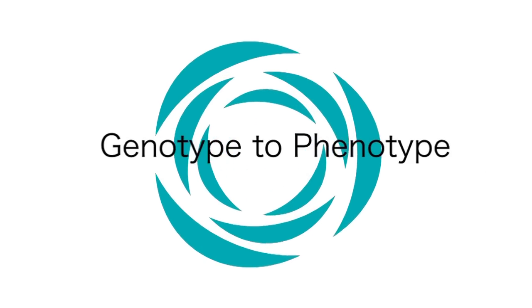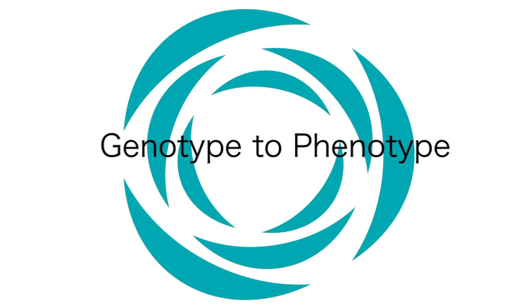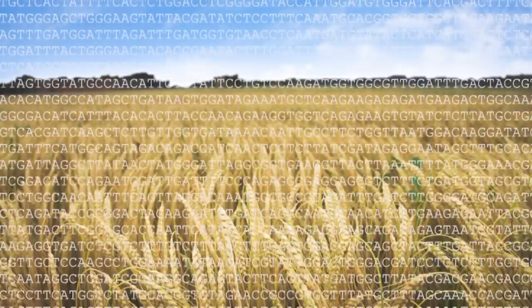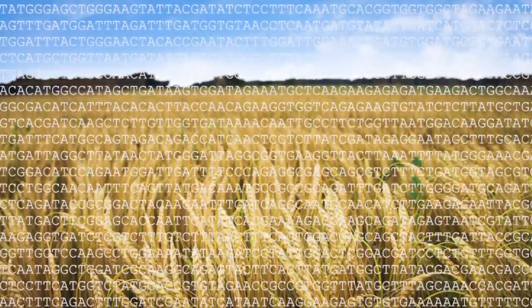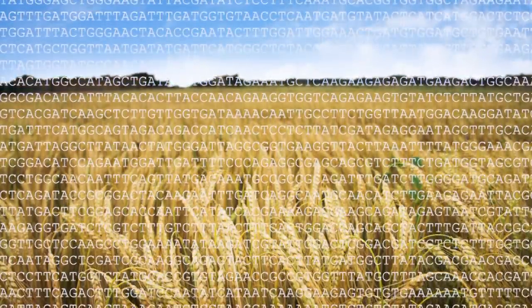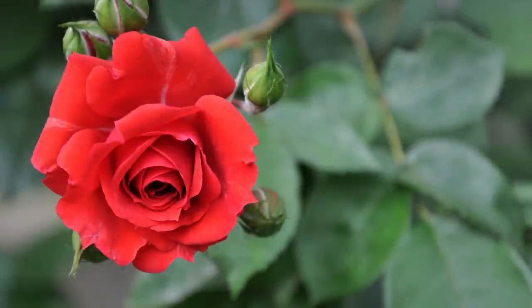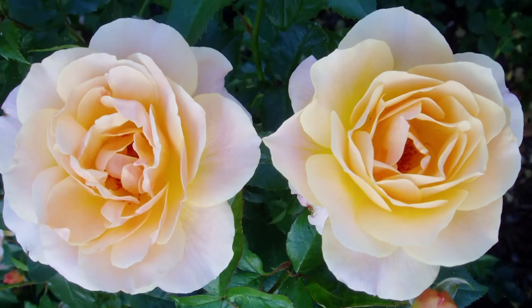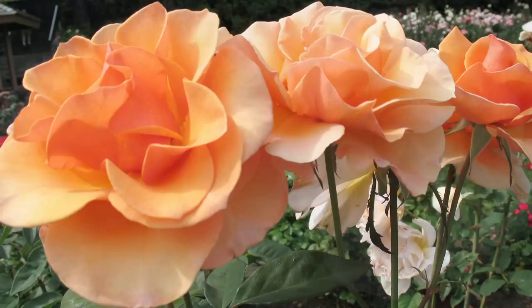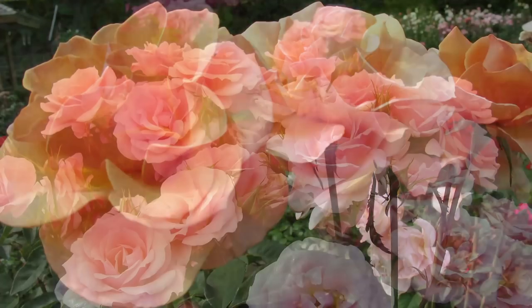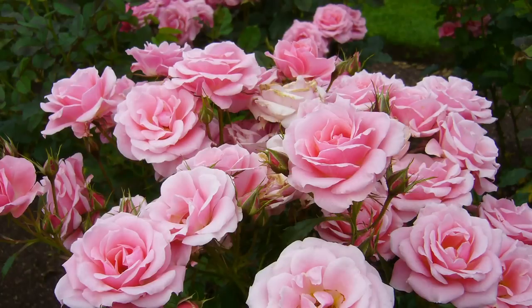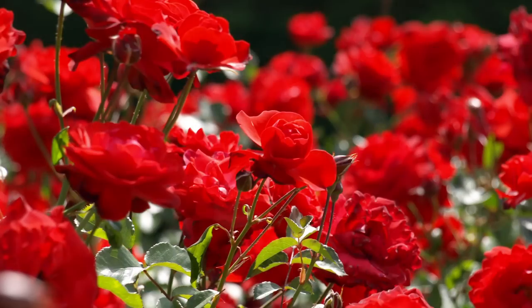Genotype and phenotype are two of the most basic concepts in biology. Genotype is the DNA code that genetically defines a living thing. The interaction between genotype and environment produces a phenotype — the physical, biochemical, and behavioral traits that allow an organism to survive.